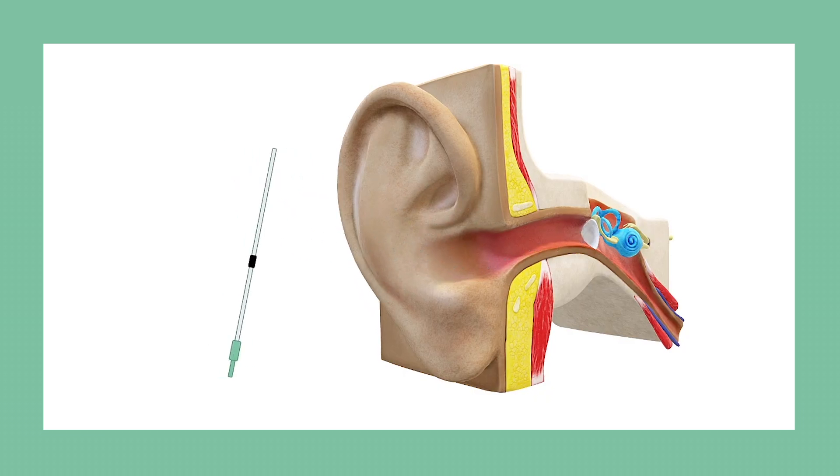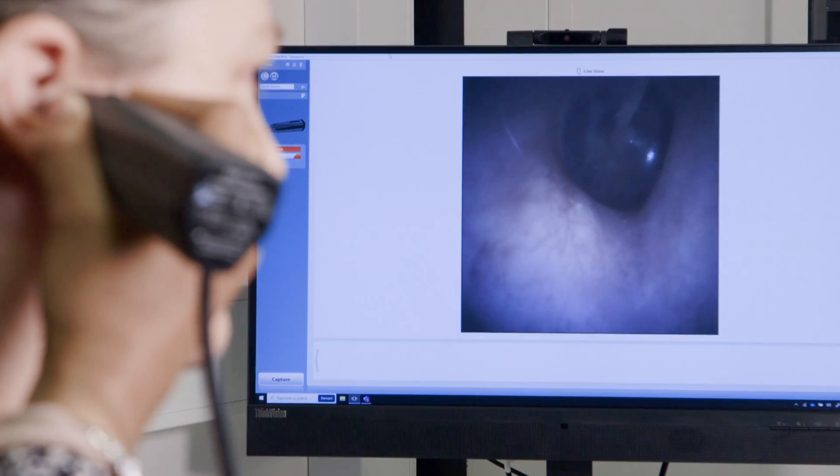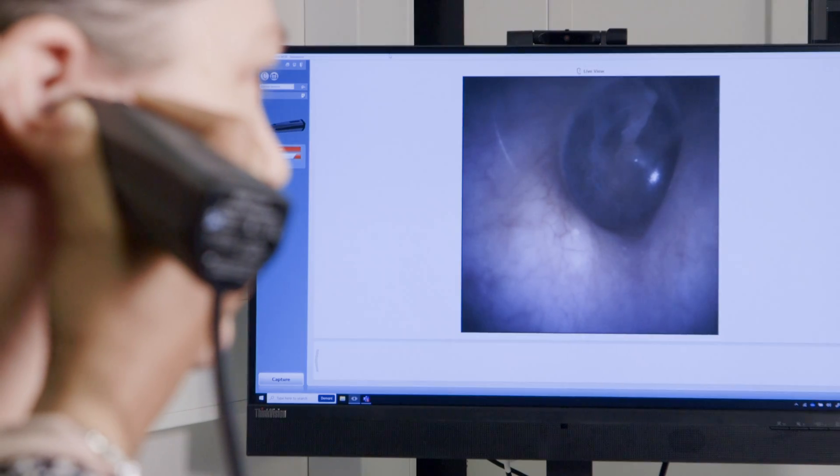The probe tube should be placed within 5 millimeters of the eardrum. By performing otoscopy, you can estimate the length of the ear canal and then determine the depth of the probe tube.